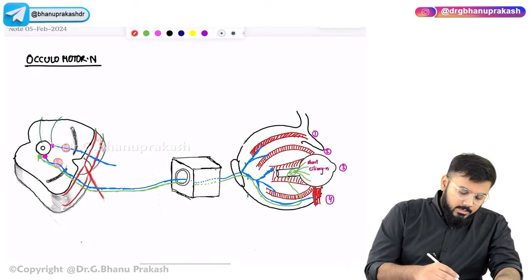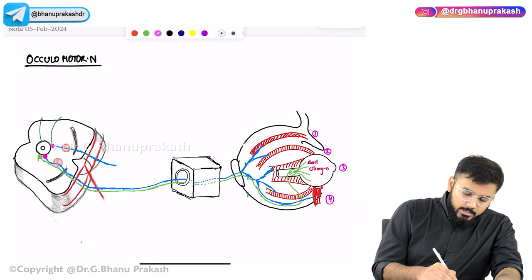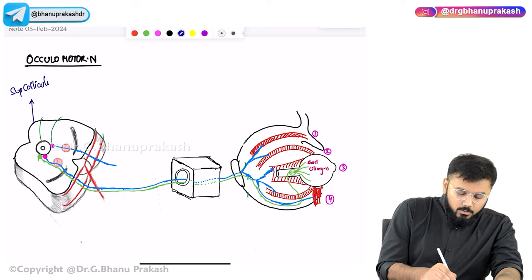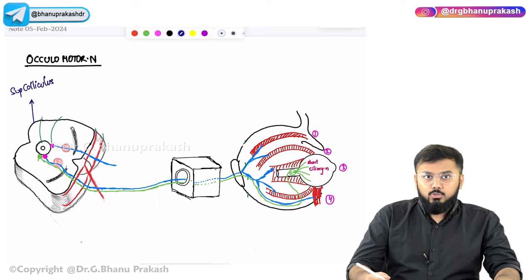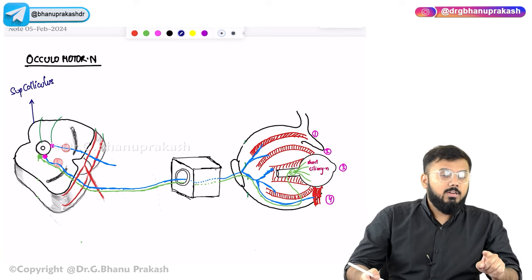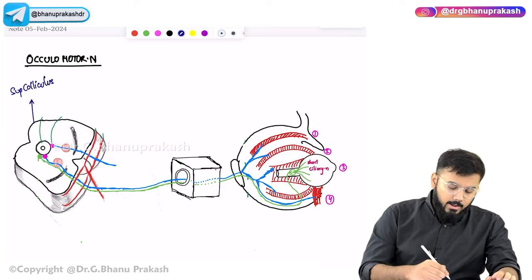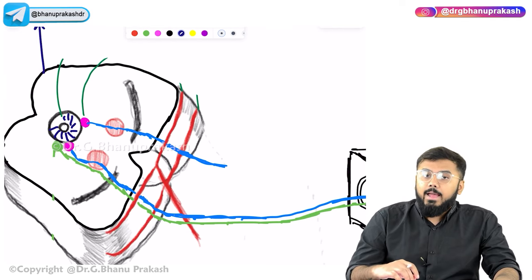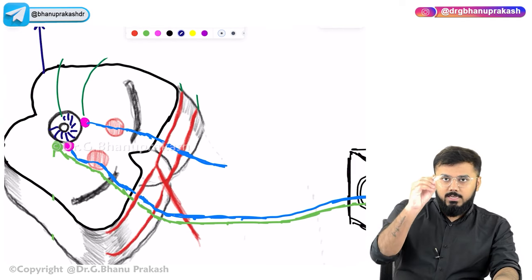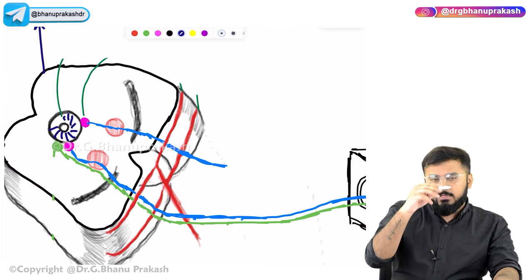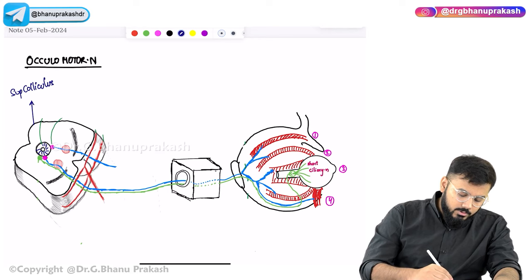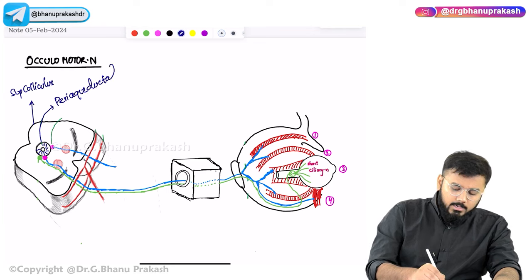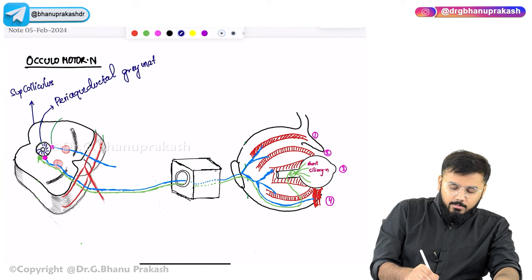This particular structure at the back is called the superior colliculus. We have one superior colliculus and one inferior colliculus. The superior colliculus is responsible for vision, whereas the inferior colliculus is responsible for hearing. The structure drawn around the aqueduct is called the periaqueductal gray matter — gray matter surrounding the aqueduct.